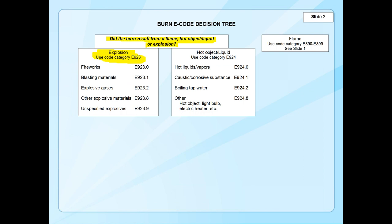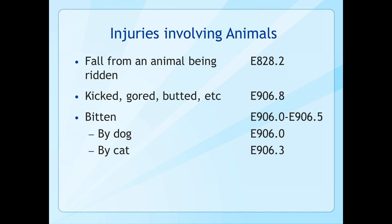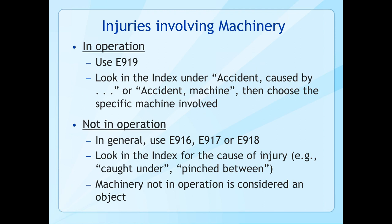For burns resulting from hot objects or explosion: hot objects and hot liquids are straightforward. For explosive gases, the code is E923.2. A common scenario seen in trauma registries is a person on oxygen who was smoking a cigarette and sustained a flash burn to the face — E923.2 is the appropriate code for that situation.